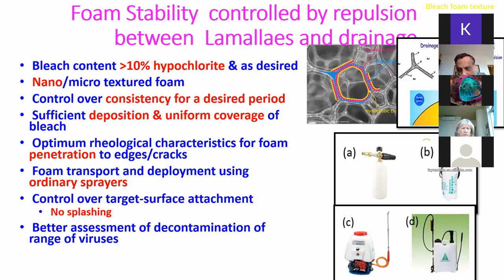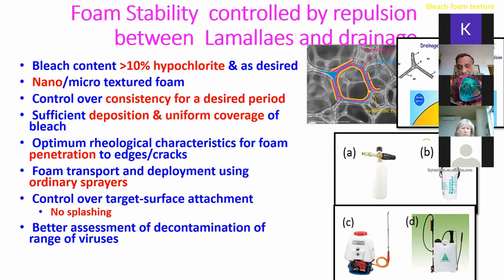The delivery options are shown at the bottom, starting with the smallest one and going all the way to the very bottom right, where we can spray on automobiles. Using others, you can also decontaminate aeroplanes and so on. You can control coverage with no splashback — splashback is a big problem. And you get better assessment of decontamination of a range of viruses by using a strip which can sense the presence of bleach.